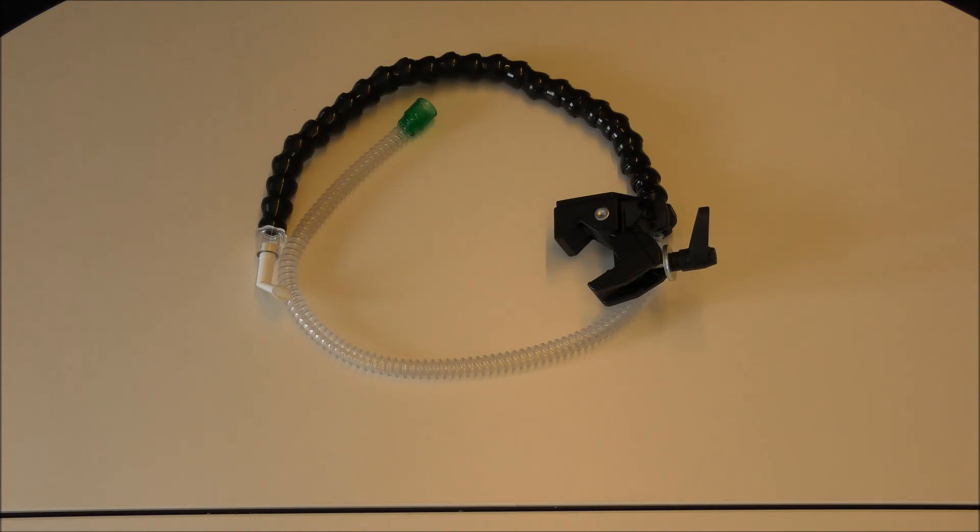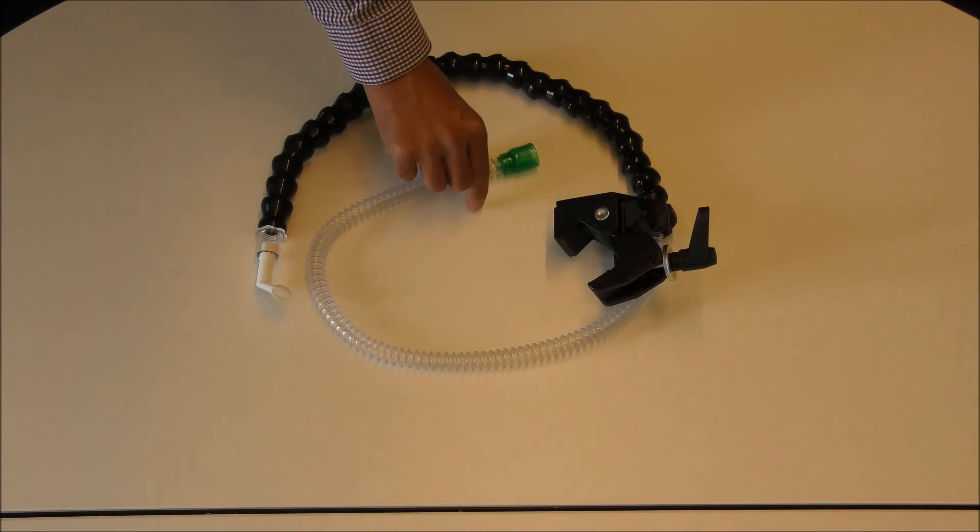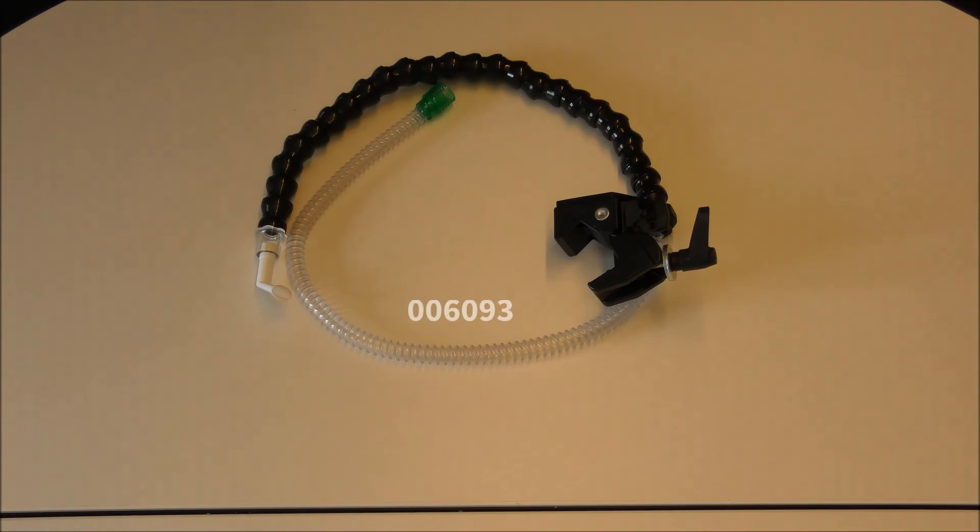Here we see the specific circuit for use of mouthpiece ventilation with Vivo50 and the Vivo60 ventilators. The circuit has part number 006093 and the arm has part number 006095. For more information, please refer to the tutorial movies made about mouthpiece ventilation.